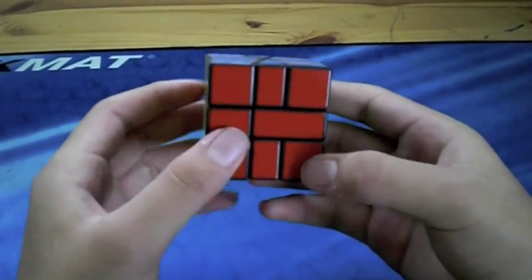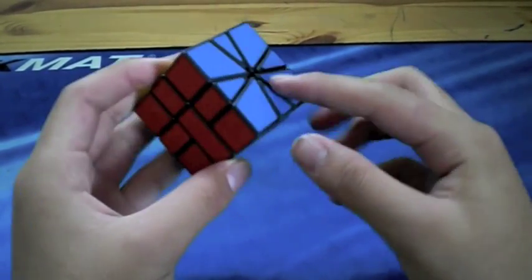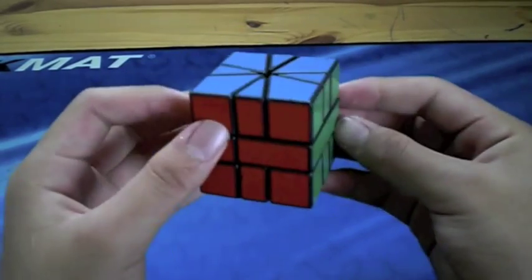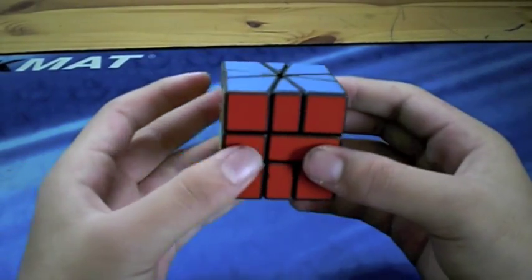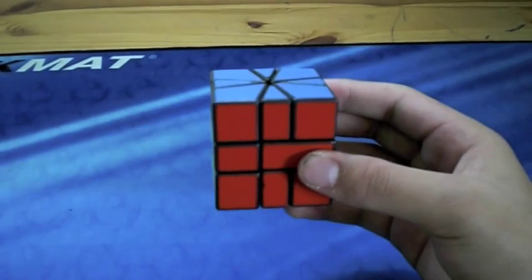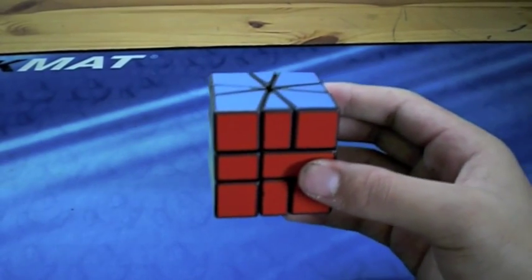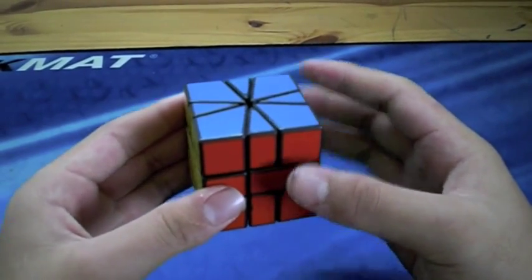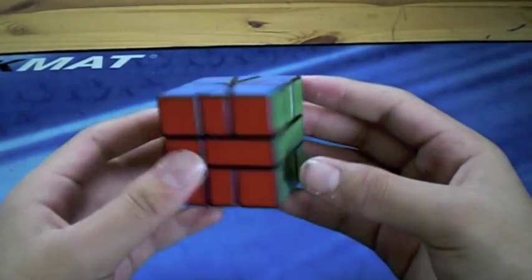Hey everyone, this is just going to be a tutorial on how to get the Square-1 back into the square. I'm not going to teach you how to solve the whole thing because most of it is just learning algorithms and learning where to use them and it shouldn't require much of a tutorial.